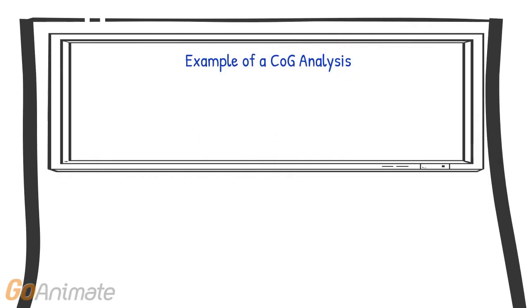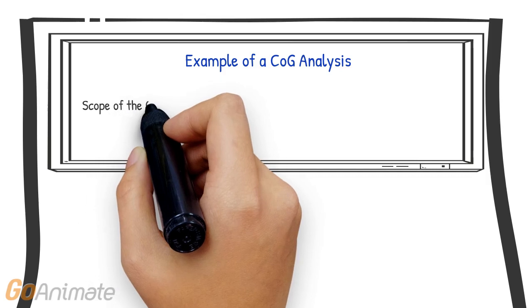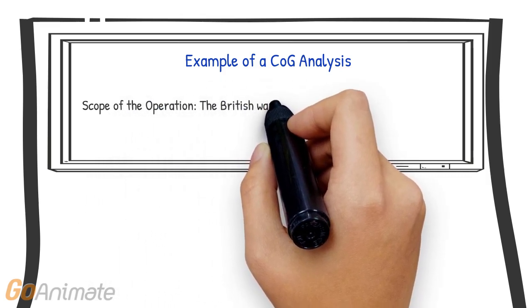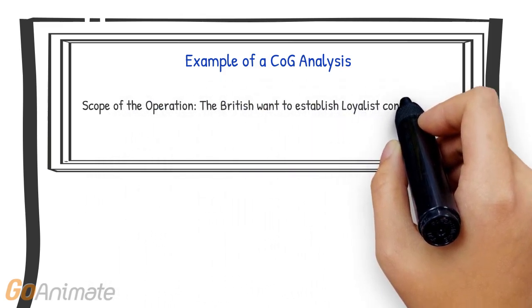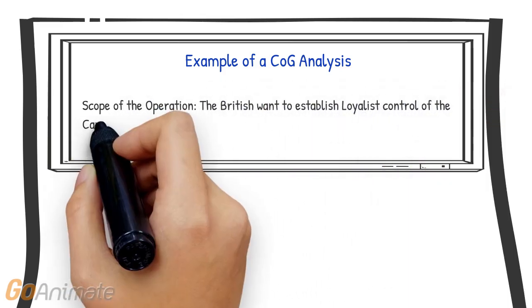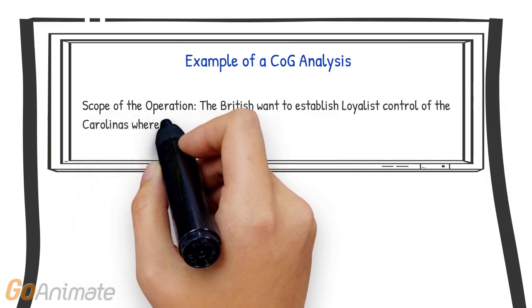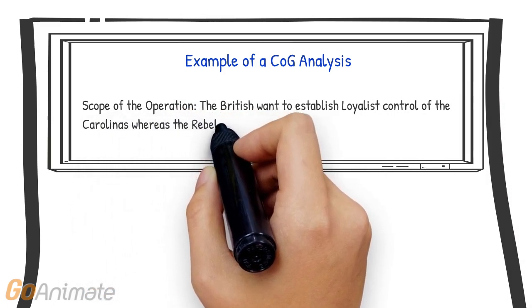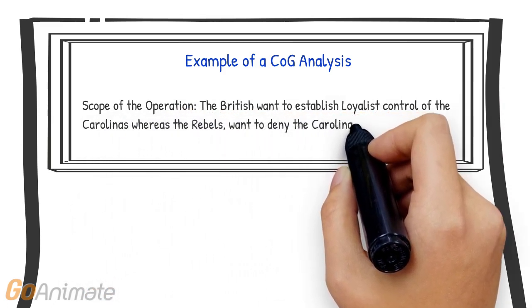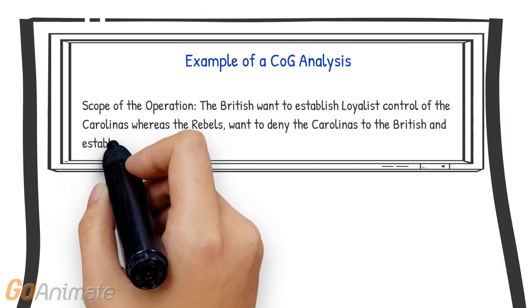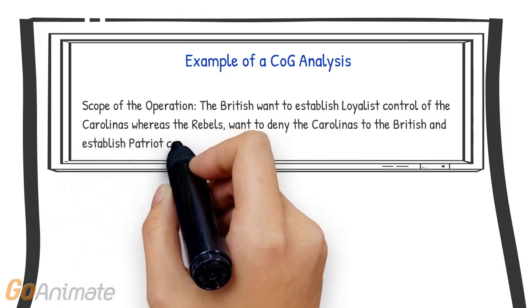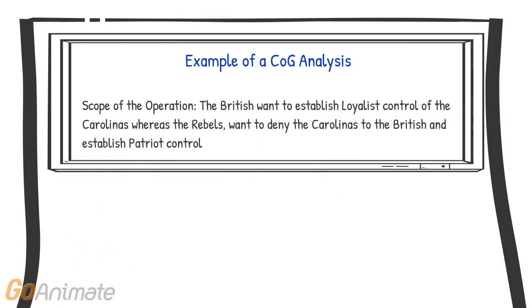So, how is the analysis conducted? First, determine the adversary's goal. In this example, the rebels — the British adversary in the southern campaign of the American Revolution — want to eliminate British military presence and loyalist governance, and instead establish patriot governance and control.